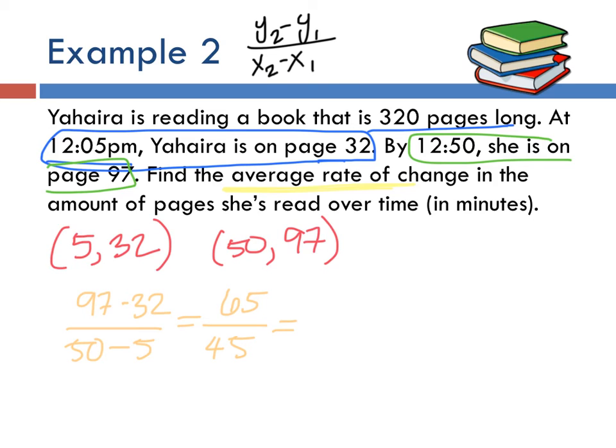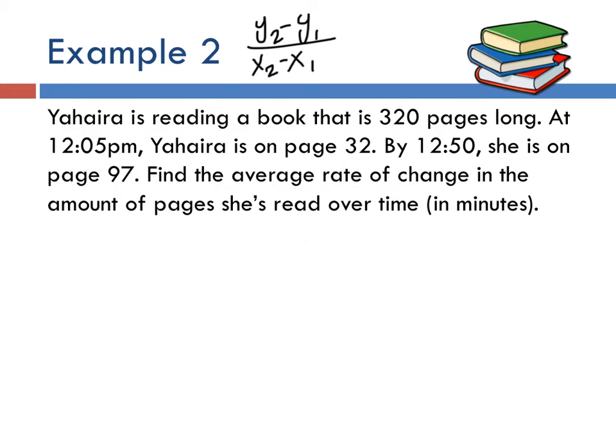What's sixty five divided by forty five? You can actually simplify that a little bit more. You get thirteen over nine. Now remember, we're not done. We still have the units. What does this mean? Thirteen over nine is the slope.